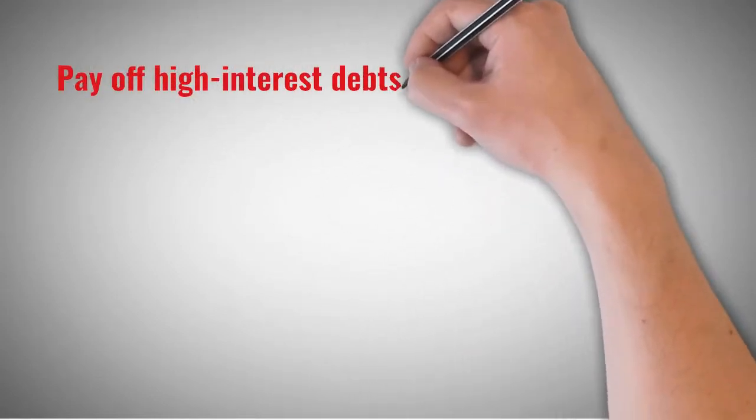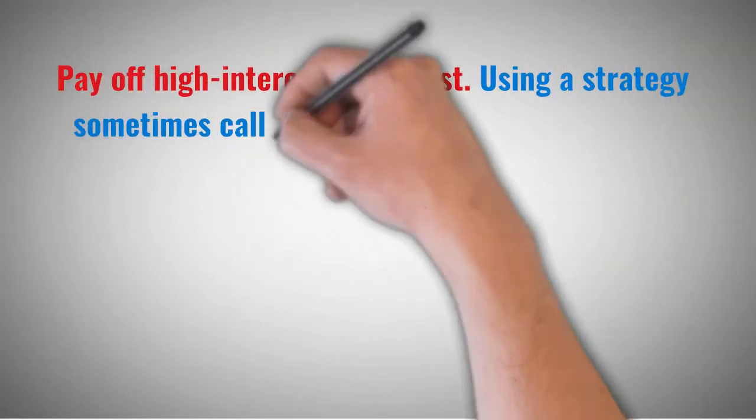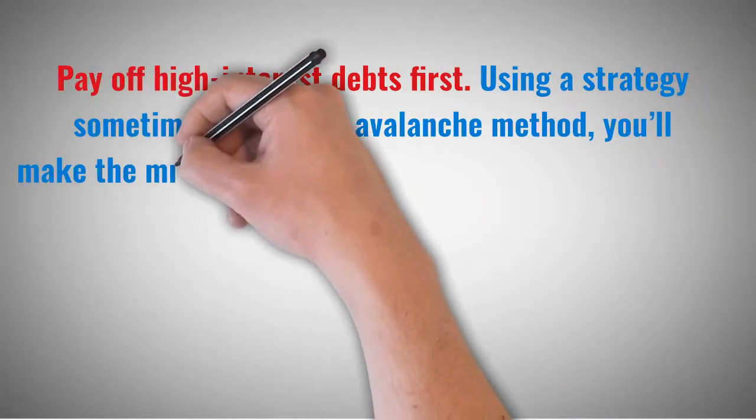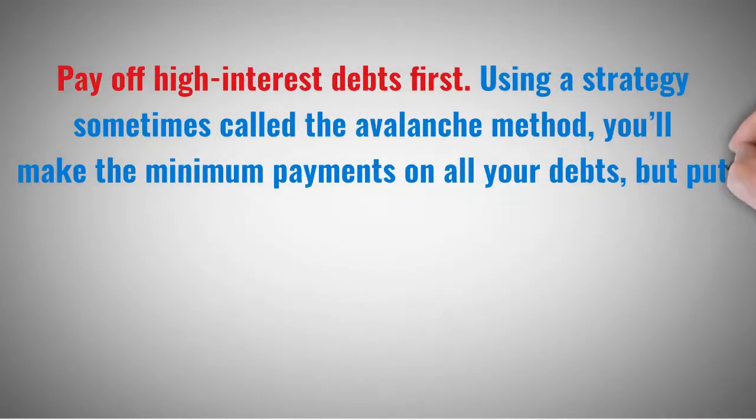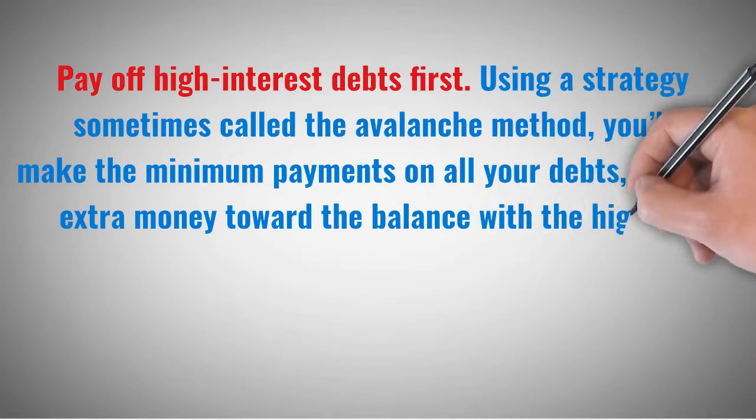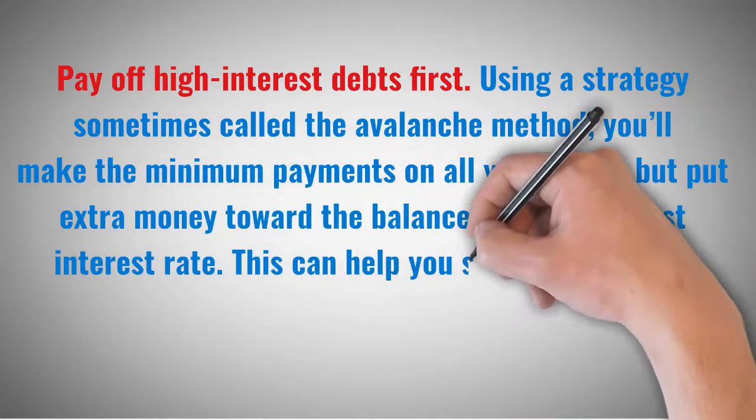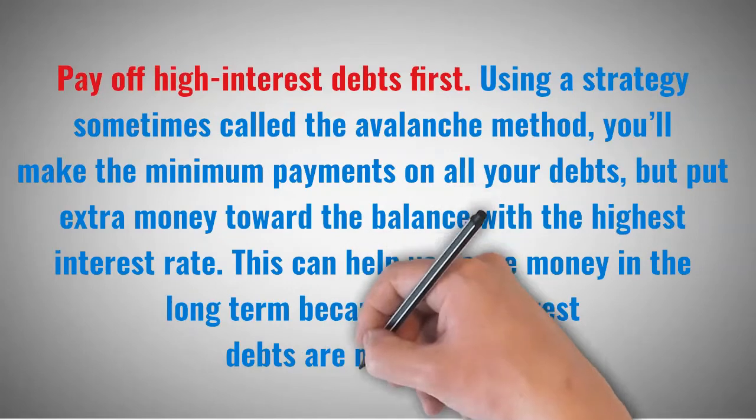Pay off high-interest debts first. Using a strategy sometimes called the avalanche method, you'll make the minimum payments on all your debts, but put extra money toward the balance with the highest interest rate. This can help you save money in the long term because high-interest debts are more costly.